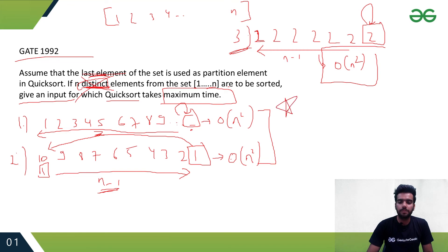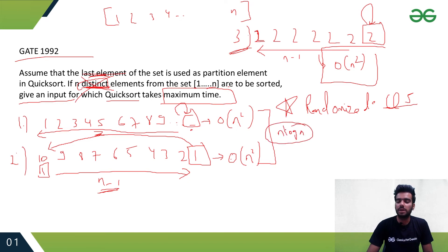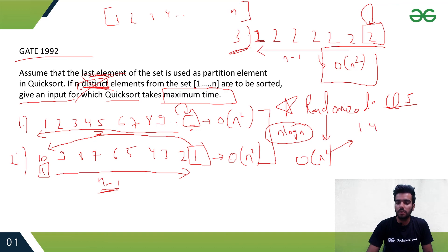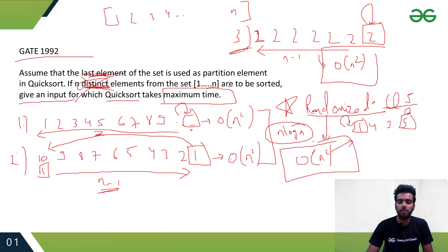One important note: in randomized quicksort, if we pick the pivot randomly the average case is O(n log n). But in the worst case, randomized quicksort also takes O(n²). For example, with array 1, 4, 3, 5 — if we randomly pick 5 first and it comes to its final position, then pick 1 next and it again comes to its final position — we are always picking the extreme element. In that scenario, randomized quicksort will also give O(n²) time.